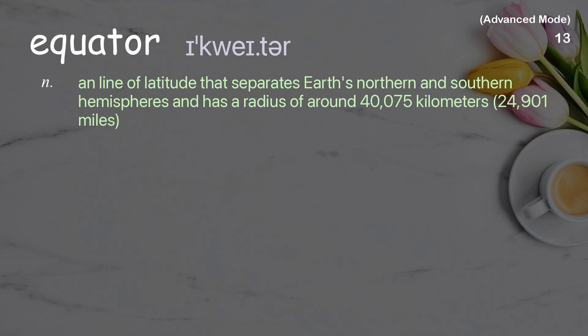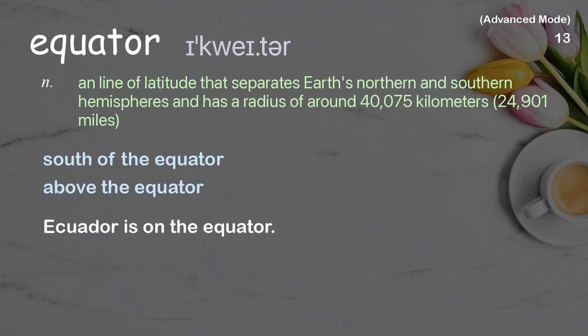Equator. A line of latitude that separates Earth's northern and southern hemispheres and has a radius of around 40,075 kilometers, 24,901 miles. Examples: south of the equator, above the equator, Ecuador is on the equator.